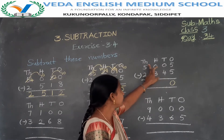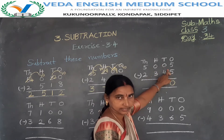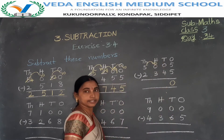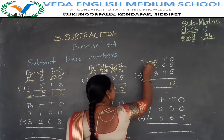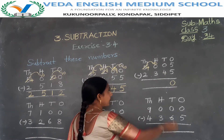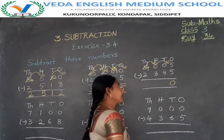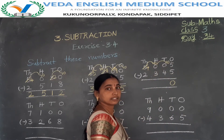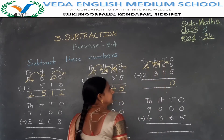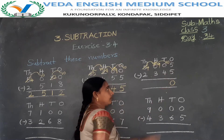First take a borrow from the thousands place to the hundreds place, then take a borrow from the hundreds place to the tens place. After borrowing, 5 becomes 4. 10 plus 0 is 10. Now take a borrow from the hundreds place to the tens place: 10 plus 0 is 10, but the 100 has gone to the tens place, so 10 becomes 9.